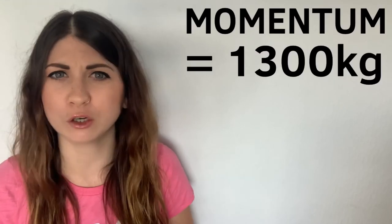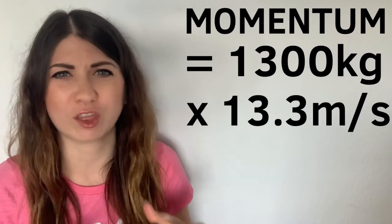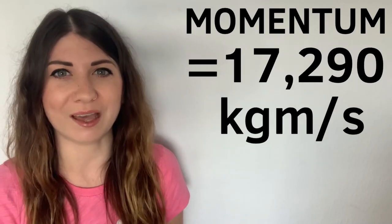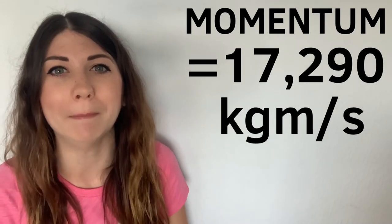Therefore when the car is traveling at this velocity it will have a momentum of 1,300 kilograms multiplied by 13.3 meters per second, equaling 17,290 kilogram meters per second. Yay successful calculation.